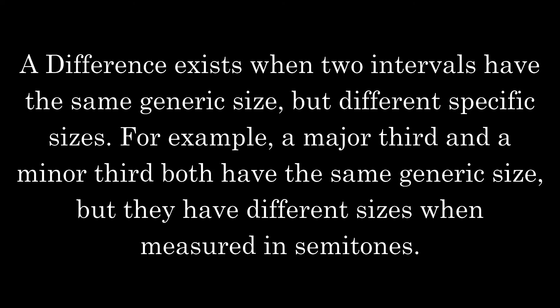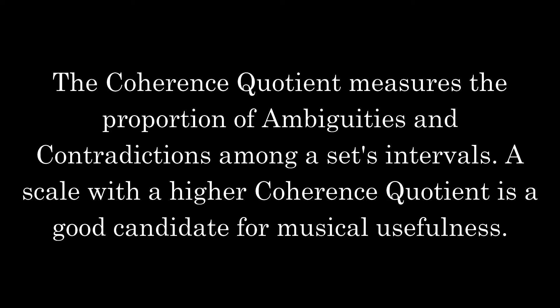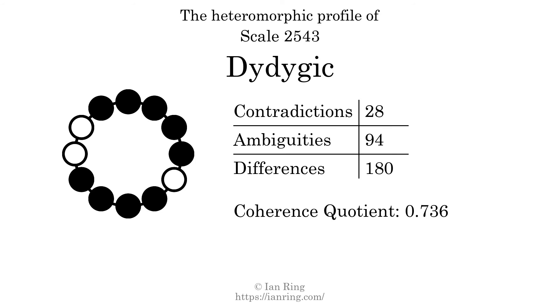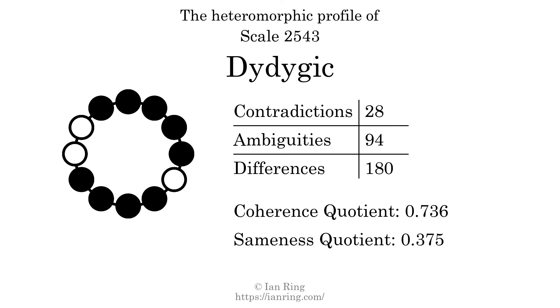A difference exists when two intervals have the same generic size but different specific sizes — for example, a major third and a minor third have the same generic size but differ in semitones. The number of differences in this scale is 180. The coherence quotient measures the proportion of ambiguities and contradictions among a set's intervals; a higher value indicates greater musical usefulness. The coherence quotient is 0.736. The sameness quotient is 0.375.